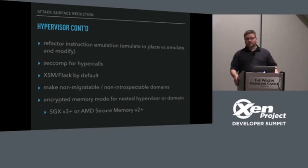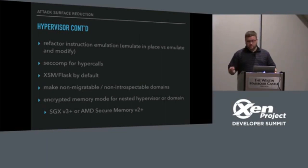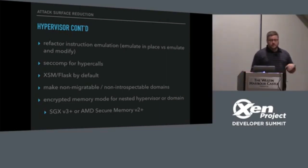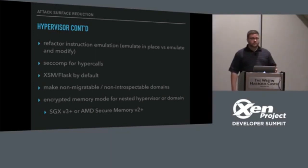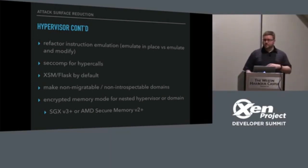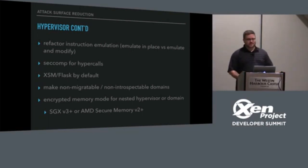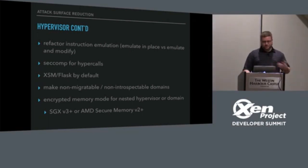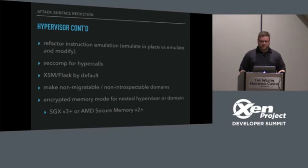One thing I'd love to see is Xen switch to XSM Flask by default. I know there are still a couple of pain points but we're working towards that. And then dynamically make domains not migratable or not introspectable — the introspection API is great, but at the same time, the introspection API is great for doing malicious things.